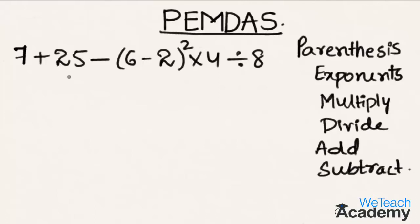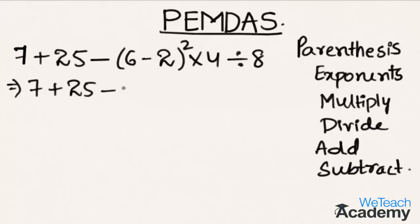According to the PEMDAS rule, first we have to simplify the parenthesis term. Solving the terms enclosed in parenthesis, we get 7 plus 25 minus — here 6 minus 2 is 4 — so we get 4 squared times 4 divided by 8. The first step of solving the parenthesis term is finished.